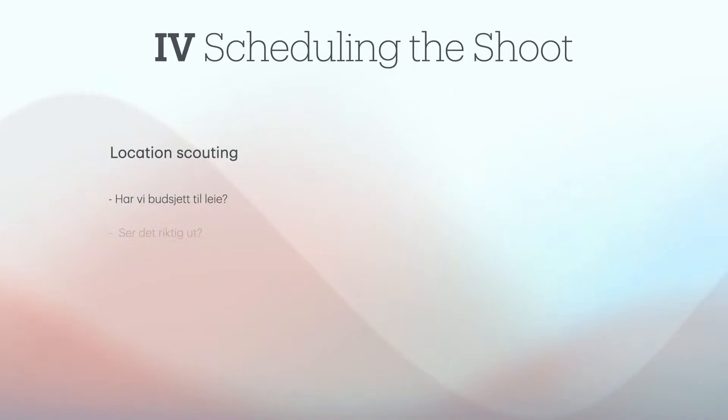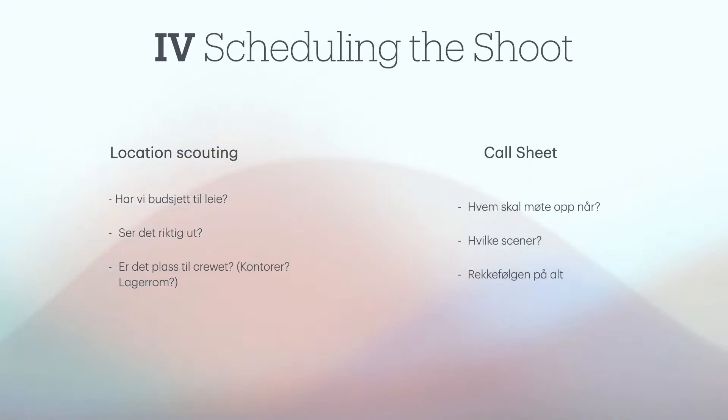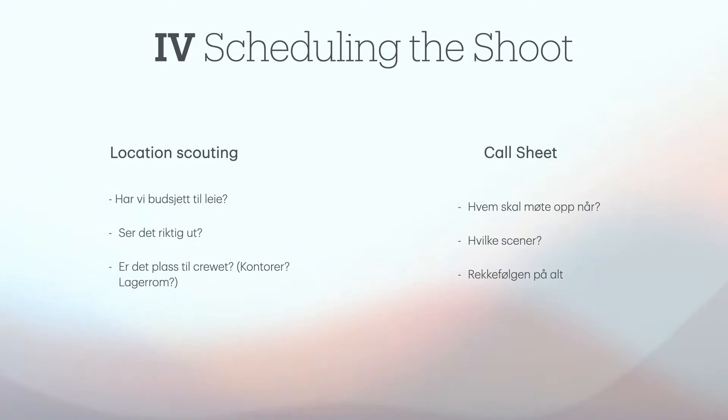Noen konkrete planleggingsoppgaver kan inkludere location scouting, som innebærer å finne locations som passer produksjonens kriterier. Da må man tenke på om man har budsjett til eventuelle leierlokale, om location fungerer visuelt, for eksempel om en hybel kan være et overbevisende hotellrom, og om det er plass nok til crew og utstyr. Så har man et call sheet. Det er det produsenten som lager, og det er en slags liste som sier hva som skal skje på en ny dag, som ofte deles ut til crewet på slutten av dagen før. Her står det hva som skal skytes, hvem som skal møte opp til hvilket tidspunkt, og annen relevant informasjon fra akkurat den dagen.